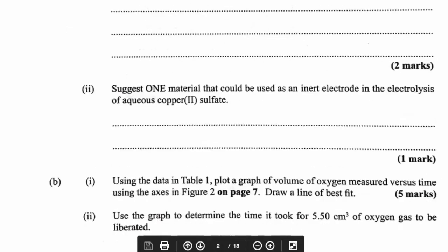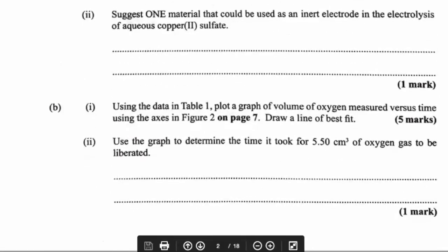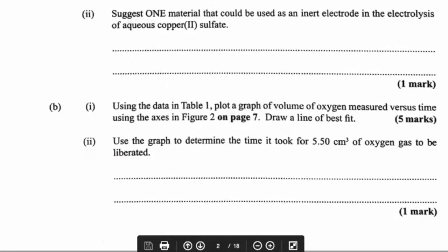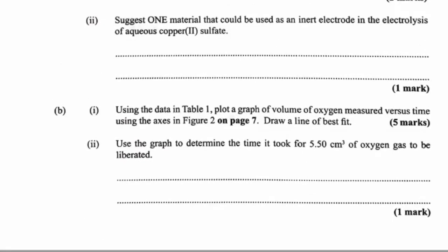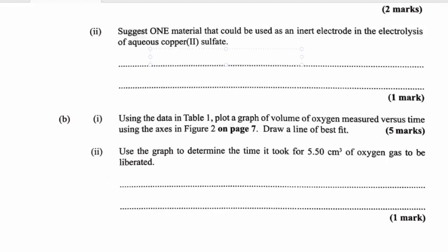One material that could be used as an inert electrode in the electrolysis of aqueous copper 2 sulfate — we could use platinum, or we could use carbon, which we call graphite. So the answer would be platinum or graphite.